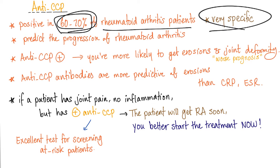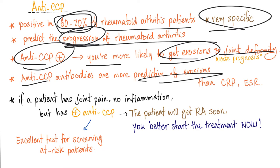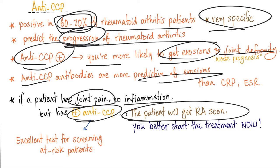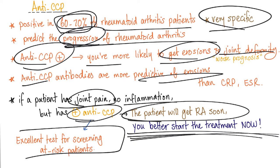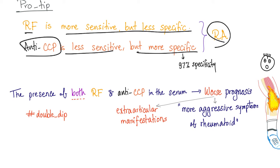Anti-CCP is positive in 60–70% of patients with rheumatoid arthritis — by definition not very sensitive, but it is very specific. It predicts the progression of rheumatoid arthritis: positive anti-CCP means you're more likely to get erosions and joint deformity, giving it prognostic value correlating with disease severity. Anti-CCP can predict erosion, and if you have joint pain but no inflammation with positive CCP, you will get rheumatoid arthritis soon — making it an excellent screening test for at-risk patients. Rheumatoid factor is more sensitive but less specific; anti-CCP is the opposite.